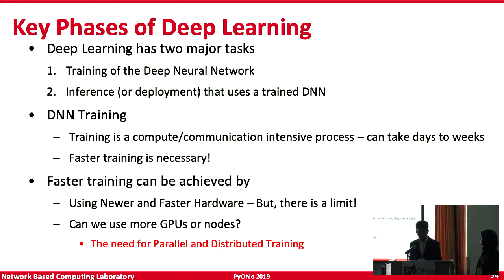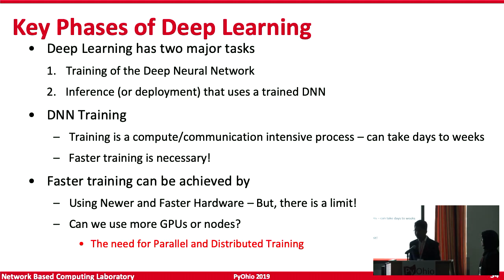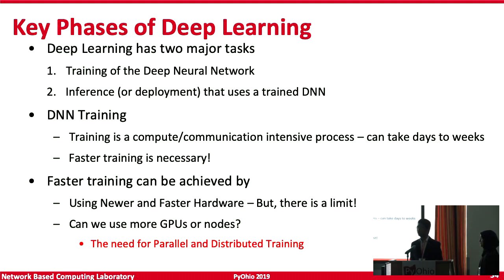A quick recap: the key phases of deep learning are training your model and then deploying it to make inference. DNN training is a compute-intensive process — as you increase the number of layers, training time increases. To achieve faster training, you can upgrade your hardware. For example, using a K80 GPU might require around five days to train AlexNet, whereas a Volta V100 might take around one hour. But there is a limit — if your dataset is huge and model is very large, you need multiple GPUs.